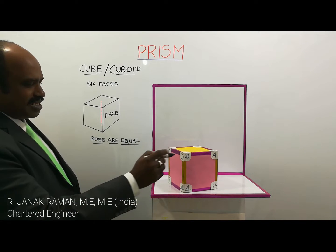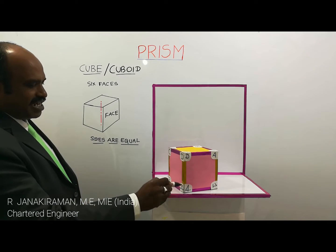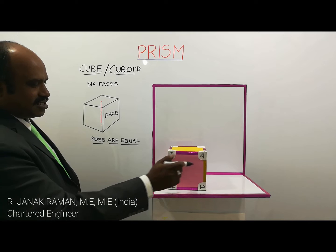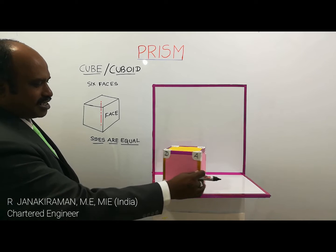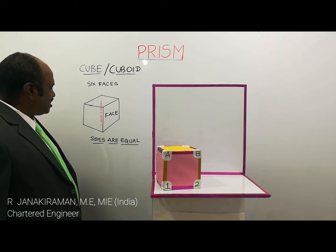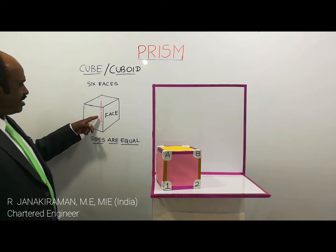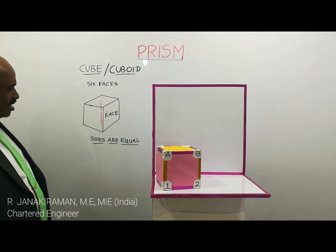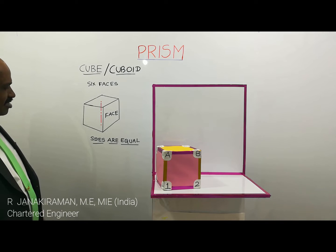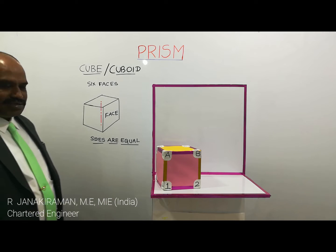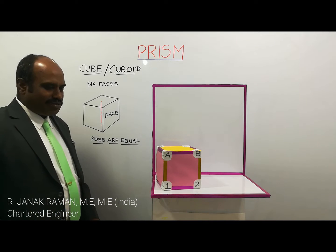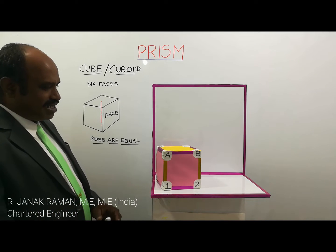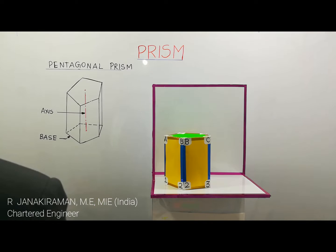These are called vertical edges — the gold color is called vertical edges. The axis is an imaginary line shown in a radiant color. All the sides are equal. This is a simple explanation about the cube.